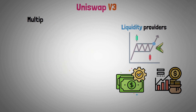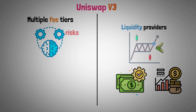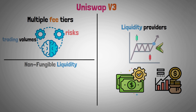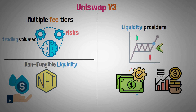Multiple fee tiers were also added in V3 to better accommodate various risk appetites and trading volumes. Another innovation is non-fungible liquidity, which enables liquidity providers to receive NFTs that represent their share of liquidity pools.